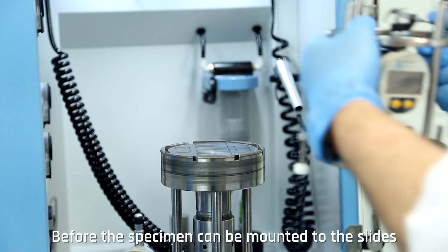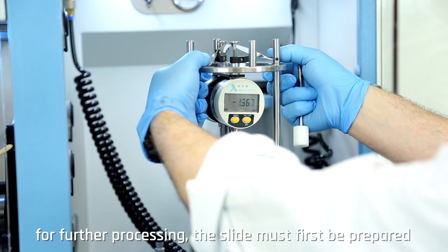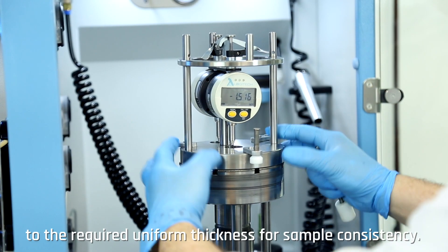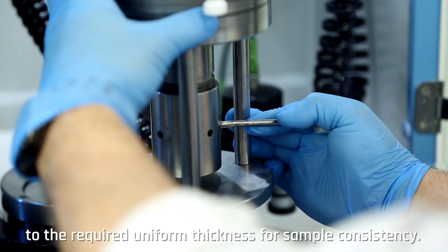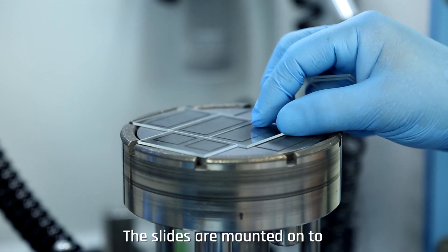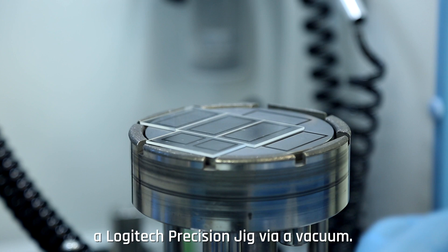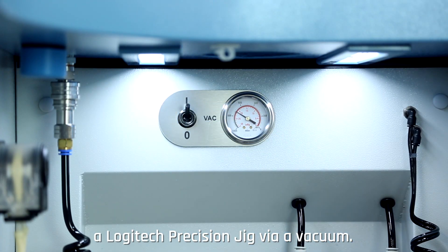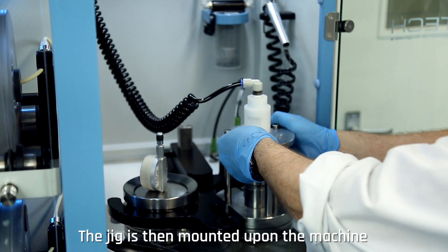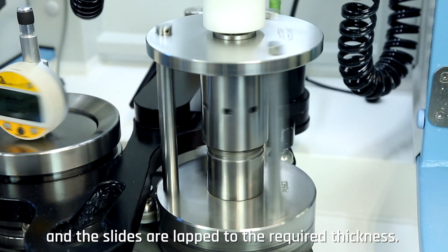Before the specimen can be mounted to the slides for further processing, the slide must first be prepared to the required uniform thickness for sample consistency. The slides are mounted onto a Logitech precision jig via a vacuum. The jig is then mounted upon the machine and the slides are lapped to the required thickness.